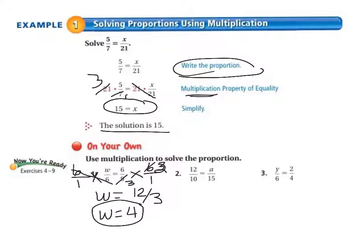Number 2 says 12/10 equals a/15. So now we need to multiply both sides by 15. We cancel out the 15's on the right, that leaves us with an a on the right. And cross cancel. 5 goes into 10 twice and it goes into 15 three times.